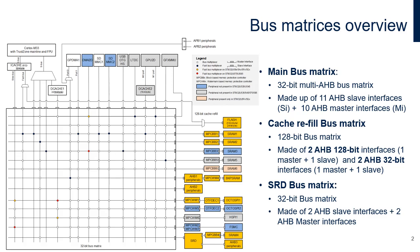The 32-bit AHB3 smart run domain (SRD) bus matrix has two slave interfaces — main matrix and LPDMA — and two master interfaces: AHB3, APB3 peripherals, and SRAM4. These bus matrices feature a fast bus multiplexer used to connect each master to a given slave without latency. For the same master, other slaves undergo a latency of at least one cycle at each new access.